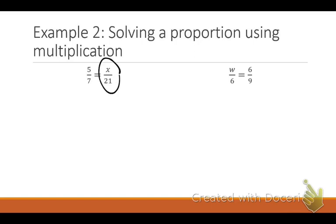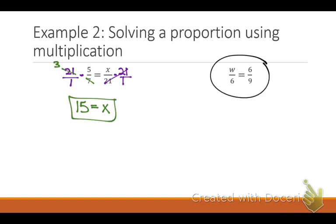In order to solve for x, I look for the value that is connected to x. What number is connected to x? 21. So I need to multiply both sides by 21. Now that I know x is by itself on the right side, is there anything I can cross-reduce on the left side? What can I cross-reduce? 7 and 21 to a 3, and x equals 15. I said 15 equals x. Is that the same thing? It is the same thing. You can really write it either way.